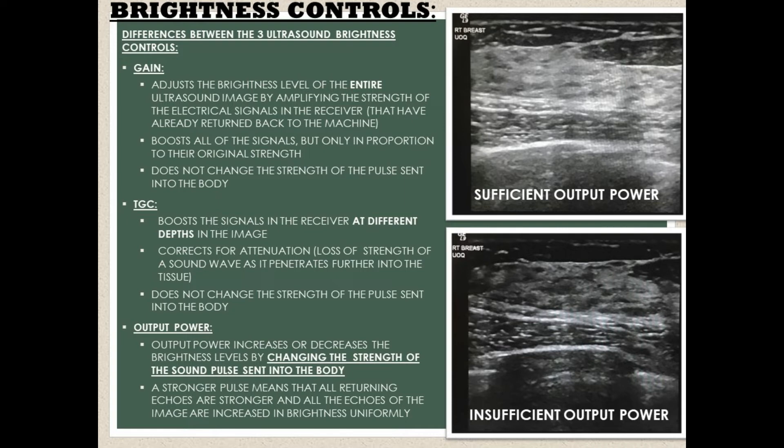The TGC control, or time gain compensation, boosts the signals in the receiver at different depths in the image. TGC corrects for attenuation — the loss of the strength of a sound wave as it penetrates further into the tissue.